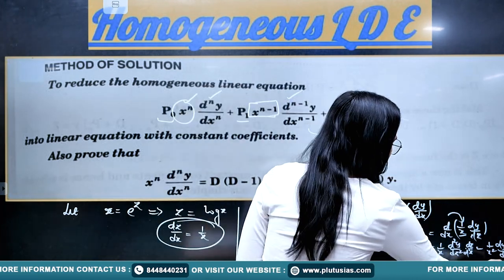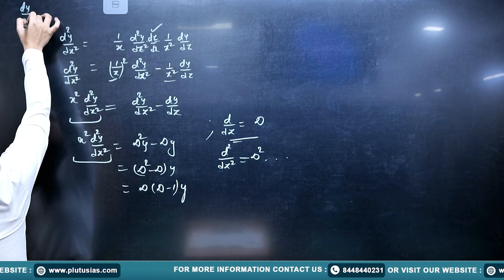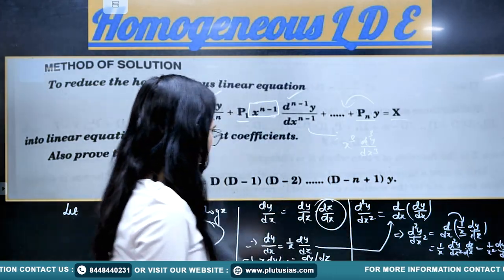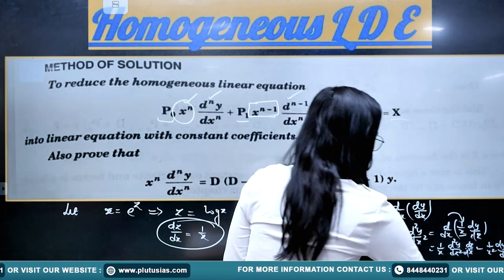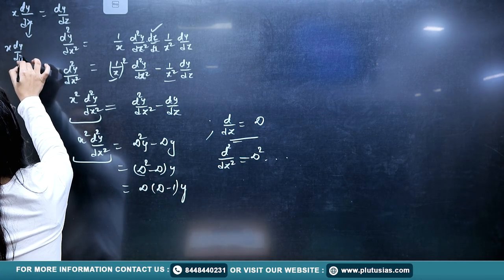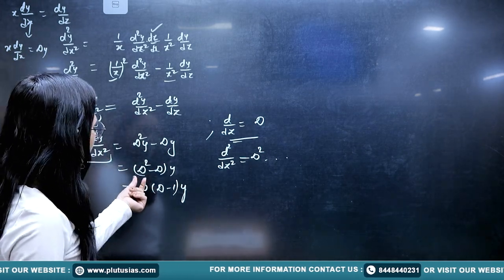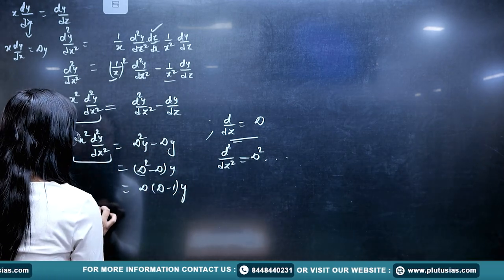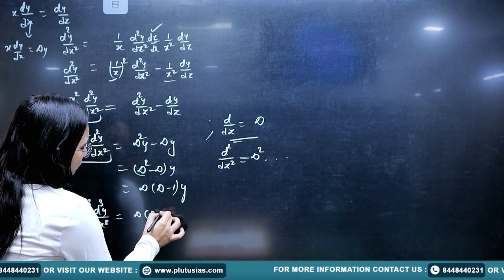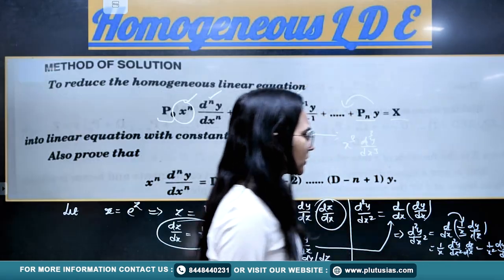Following the pattern: x·(dy/dx) = dy/dz = Dy. For the second order derivative, x²·(d²y/dx²) = D(D−1)y. Similarly, if you have a third order derivative multiplied by x³, it would be D(D−1)(D−2)y. This reduction of differential operators continues in this way, and the pattern we observe is: for the nth order derivative, the result goes up to D minus (n−1).